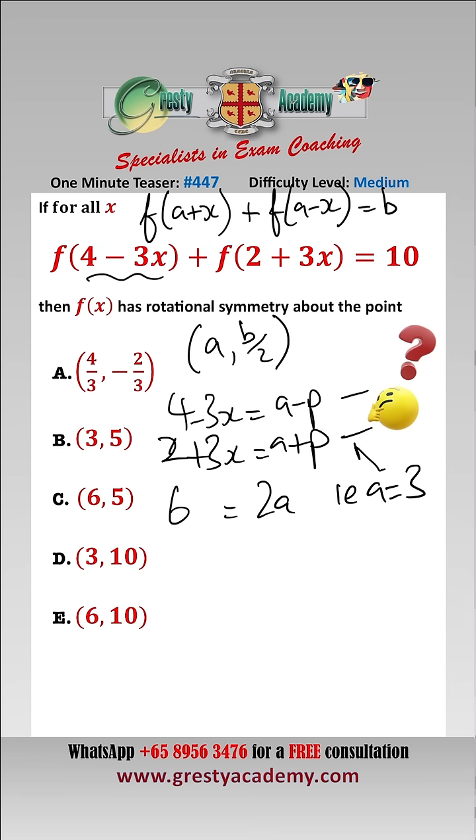We don't need to find p. Let's just plug these into here now and therefore we get that f of 3 minus p add f of 3 plus p is equal to 10, which now is in this form so we can simply read off the